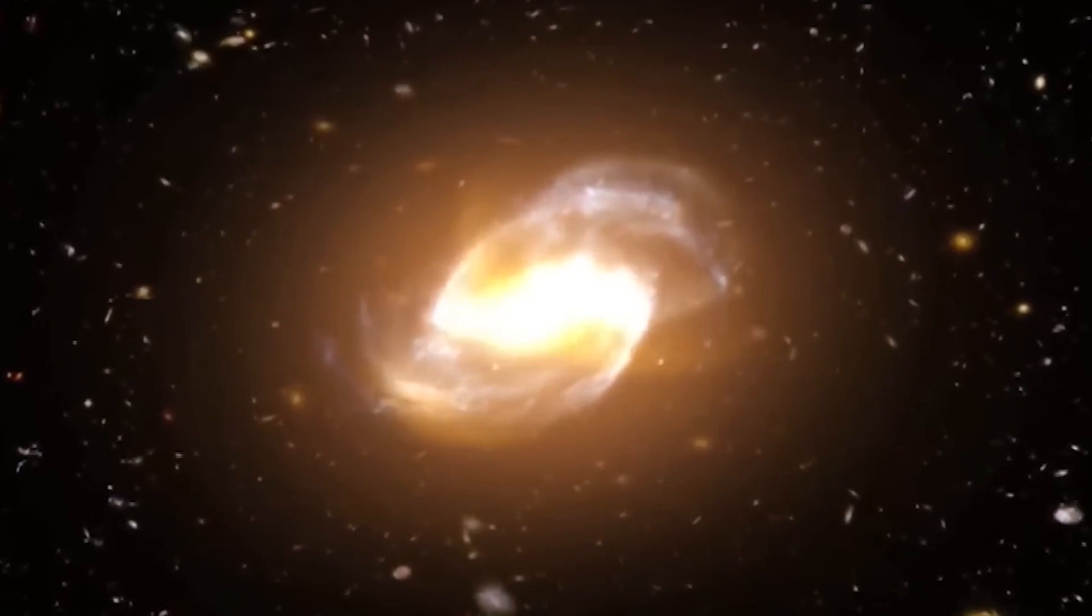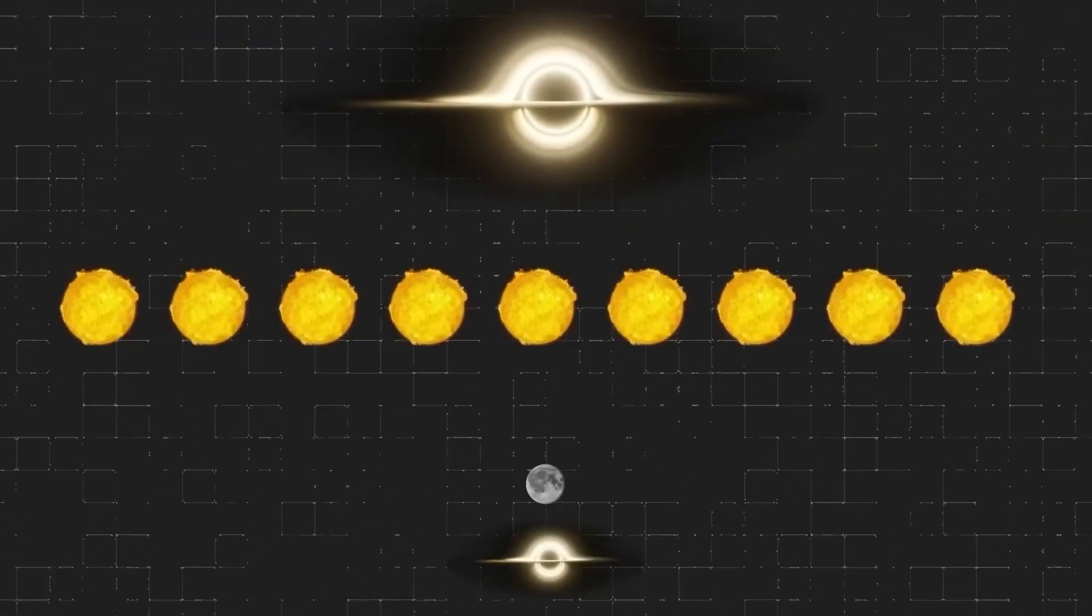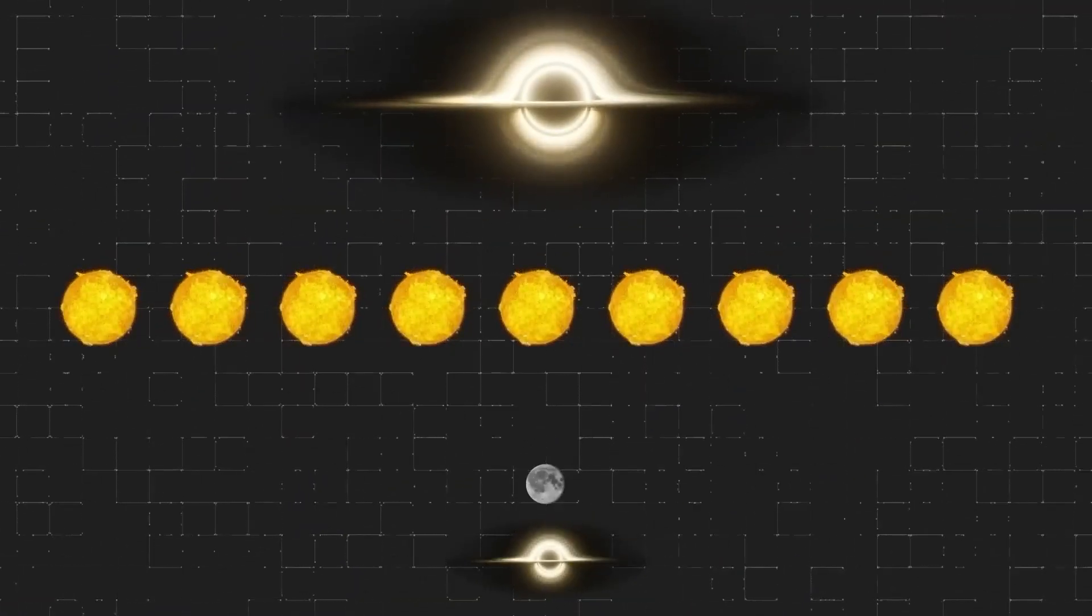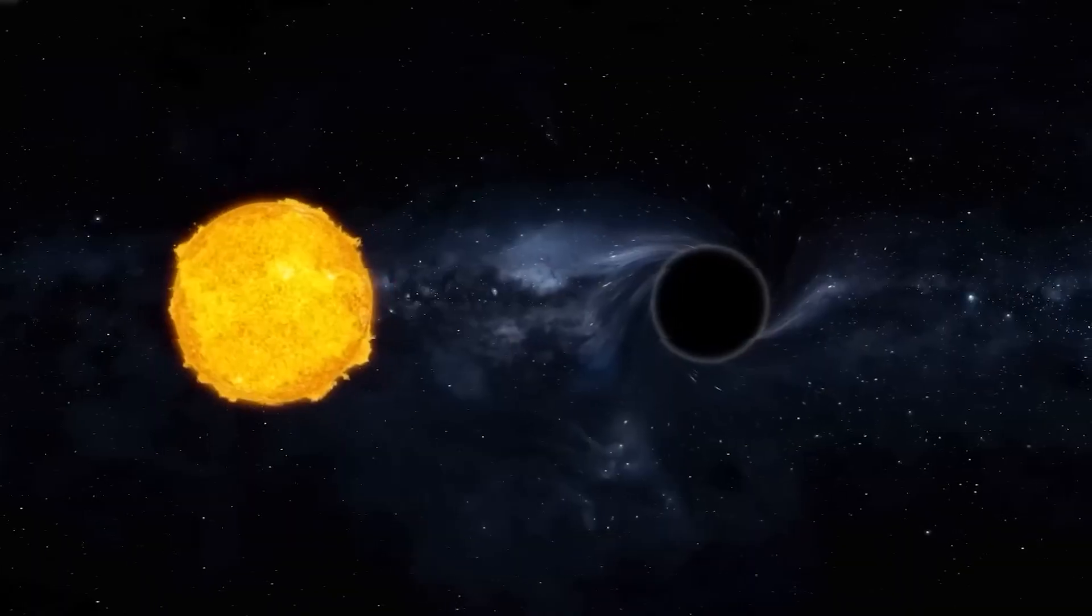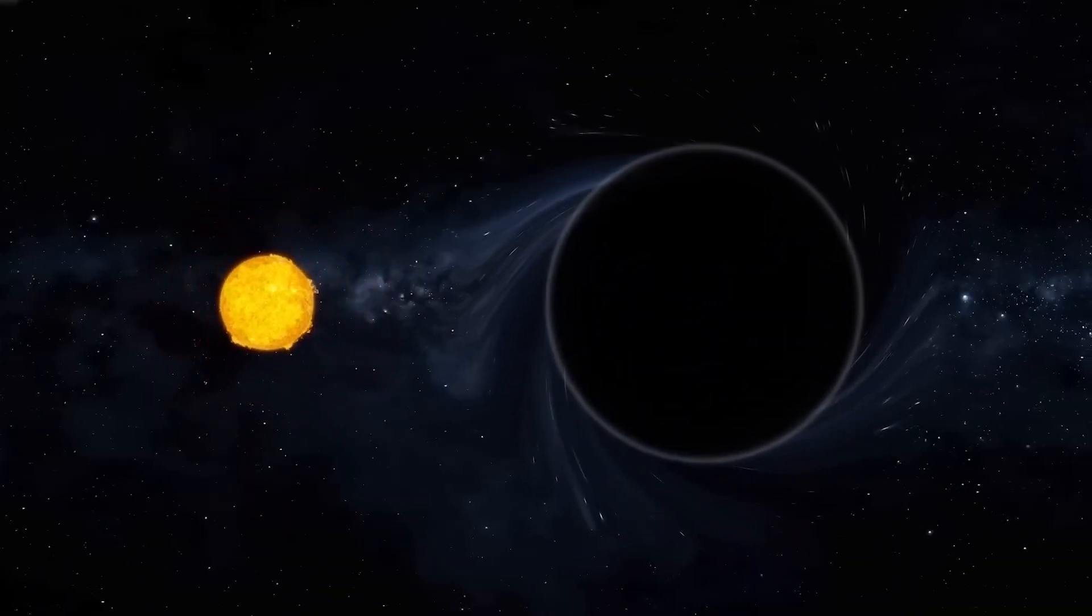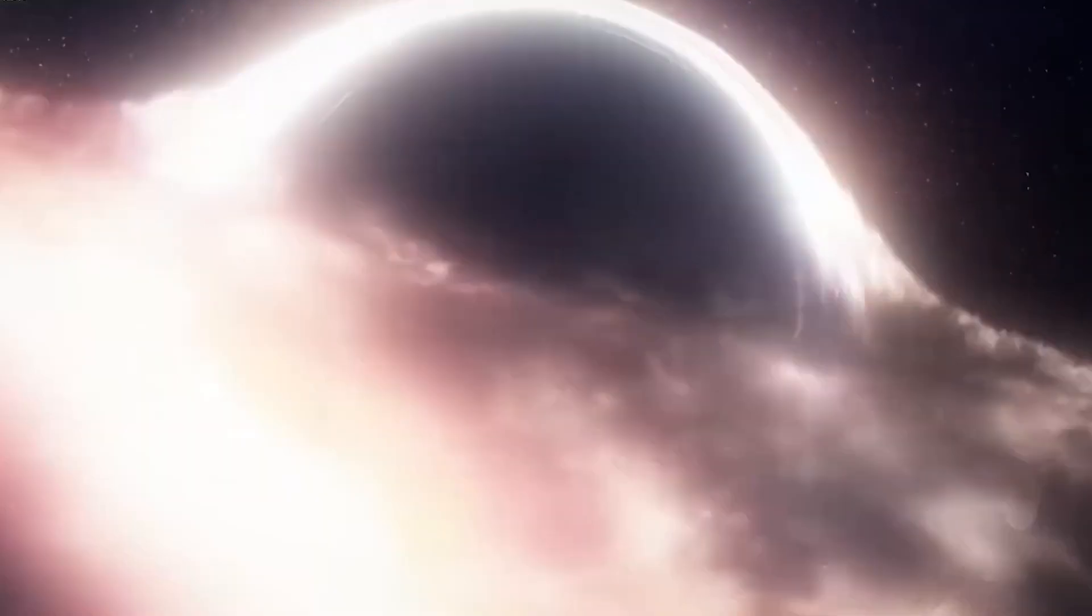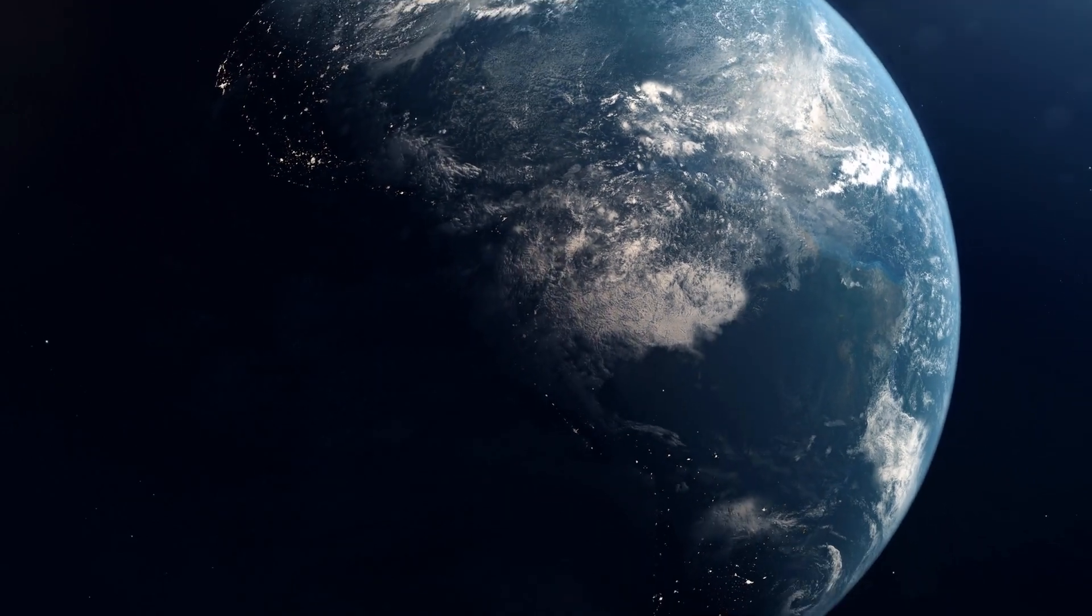The black hole in M87 is incredibly massive, about six and a half billion times the mass of our sun. The ring of radio emission around the black hole's shadow is brighter on one side because of something called the Doppler effect. As the black hole spins, the material on the side facing Earth appears brighter due to this effect.